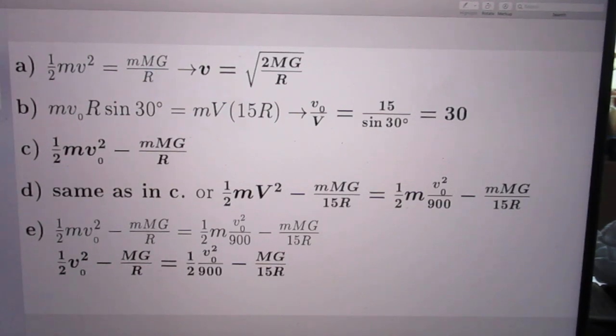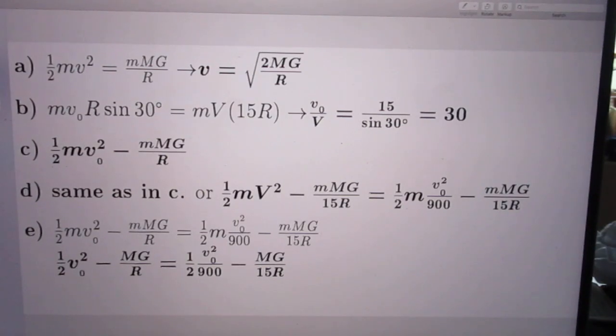Well, angular momentum is conserved. This is the angular momentum when the spacecraft leaves Earth. And this is the angular momentum when it is at its farthest distance. The two must be the same and so you immediately find that V0 over V is 30.